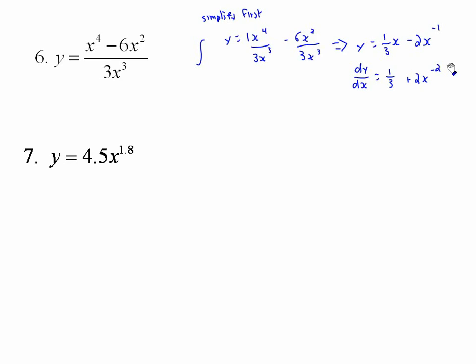Number seven: nothing bizarre here. Multiply 4.5 by 1.8 — the power rule works for real numbers — and 4.5 times 1.8 is 8.1. So dy/dx equals 8.1x to the 0.8, subtracting 1 from 1.8.